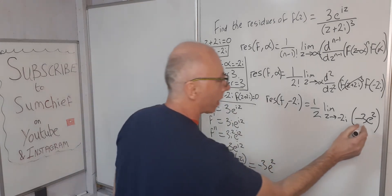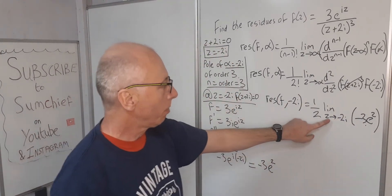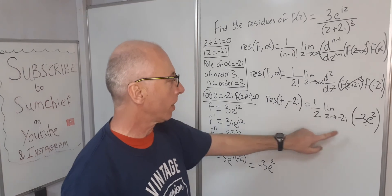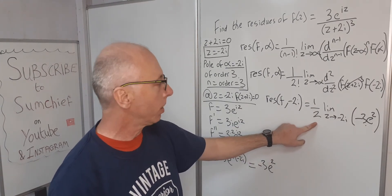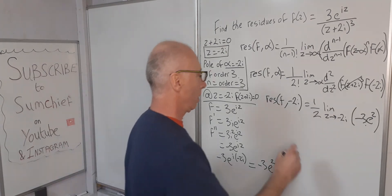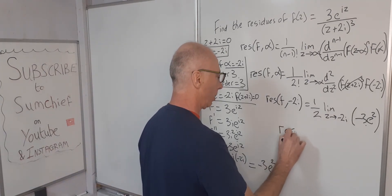That takes care of that. That's why we've got that there. So at -2i, that is our answer. -3e² is the limit. So what we need to do now is distribute the half into this.